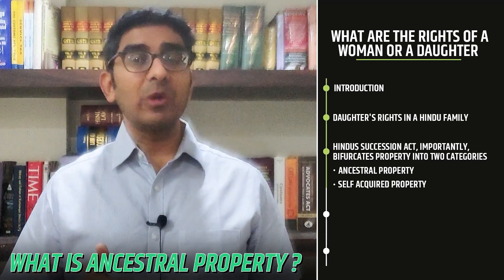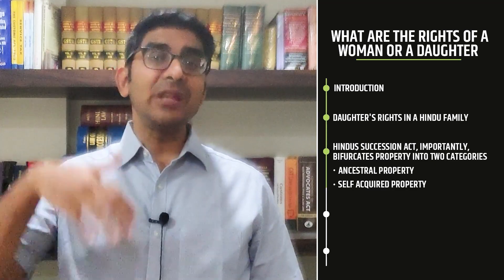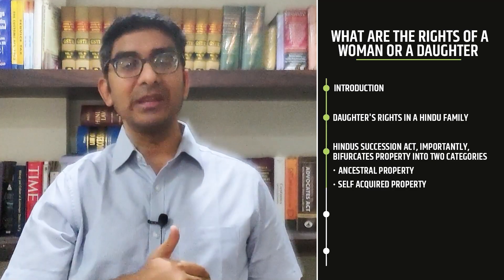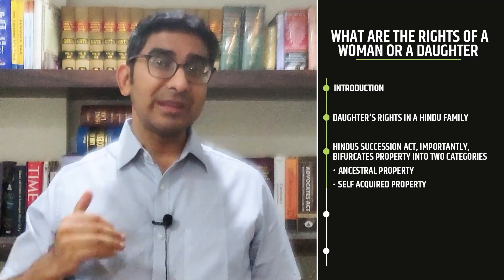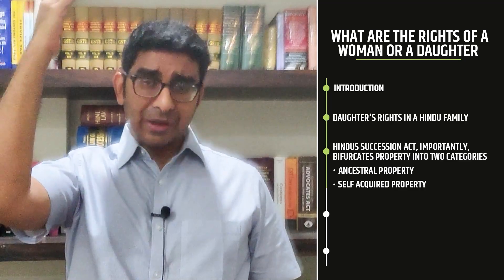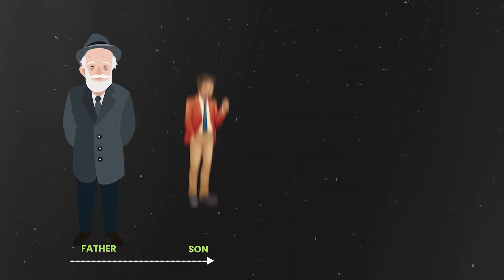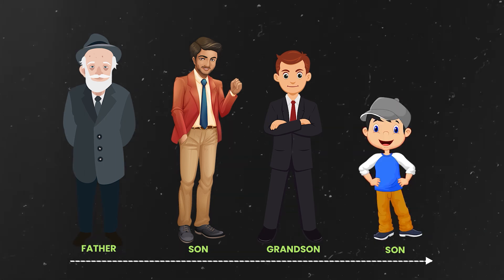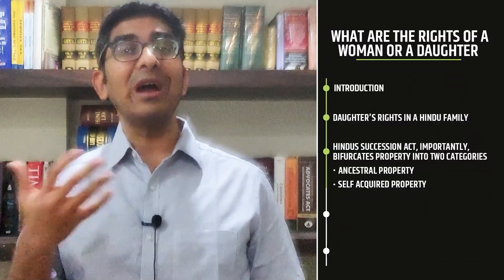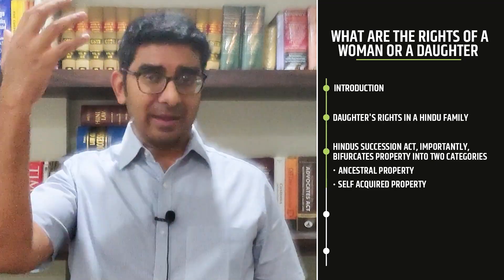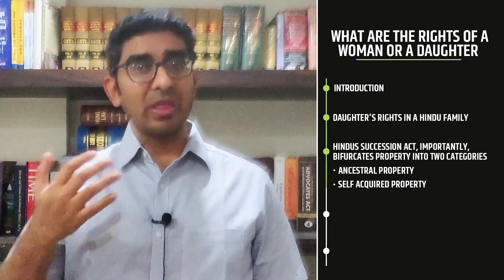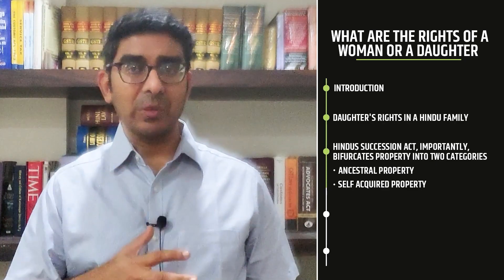What is ancestral property? Ancestral property is property that is passed down from one generation to another generation. For a property to qualify as ancestral property, it has to come down four generations — from the father, son, grandson, and the son of the grandson. Now there is always a practical problem because land records may not go back four generations, but if you are able to show that the property was within the family and had come down from one generation to another, you will be able to show that it is ancestral property.